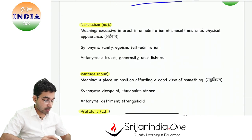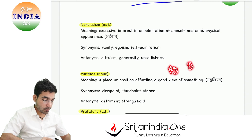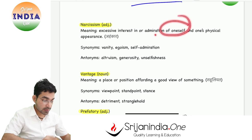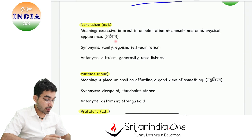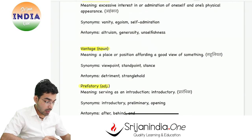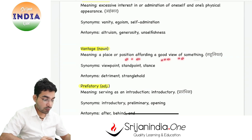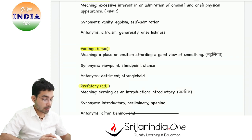Today's vocabulary: Narcissism means ahankar - excessive interest in or admiration of oneself, being full of oneself in one's physical appearance. Vantage means viewpoint, standpoint - a place or position affording a good view of something.